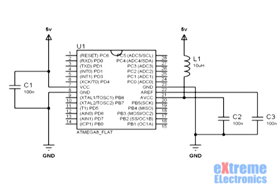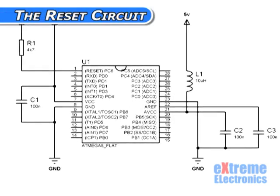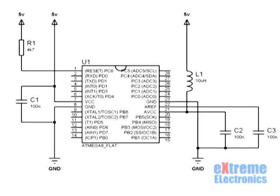The power supply is now complete. Let's move on to the reset circuit. Pin 1 is the reset pin of the MCU, and this pin must be pulled high in order to keep the MCU running. All you need is a 4.7K resistor connected from pin 1 to 5V. The up-pointing arrows in the schematic indicate the 5V power supply.